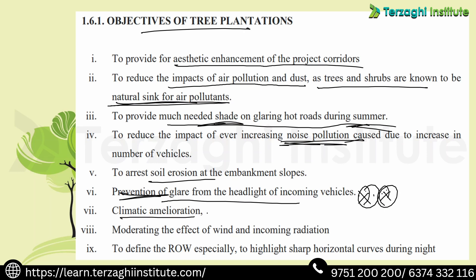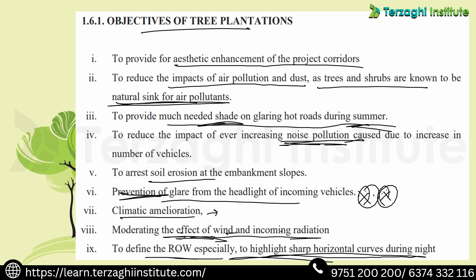Sixth objective is climate amelioration — trees influence climatic conditions, including moderating the effect of wind and incoming radiation. Seventh, to define the road, especially to highlight sharp horizontal curves during night time, so that curves are visible and drivers are alerted.